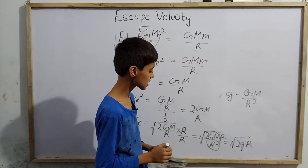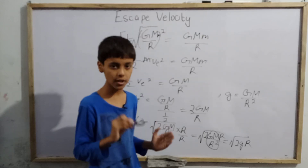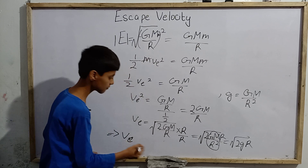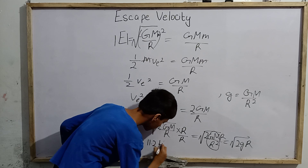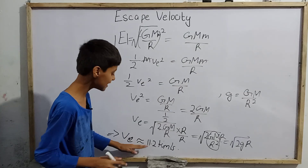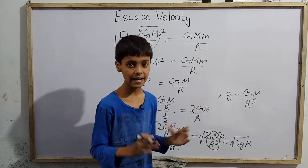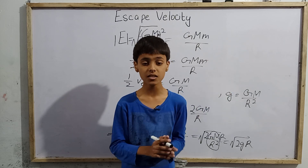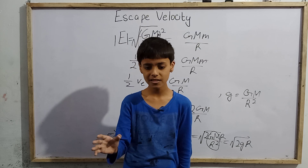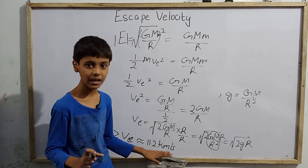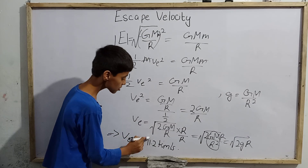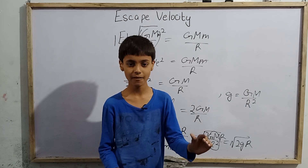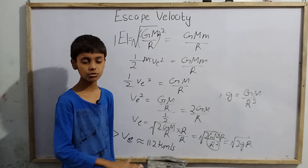If we put values for Earth — g equals 9.8 meters per second squared and r equals 6.4 into 10 to the power 6 meters — then v_e for Earth comes out to nearly 11.2 kilometers per second. So if we have a satellite present at Earth's surface and we want to get it out into orbit, or make it reach the Moon or Mars, its velocity must be at least 11.2 kilometers per second or higher.